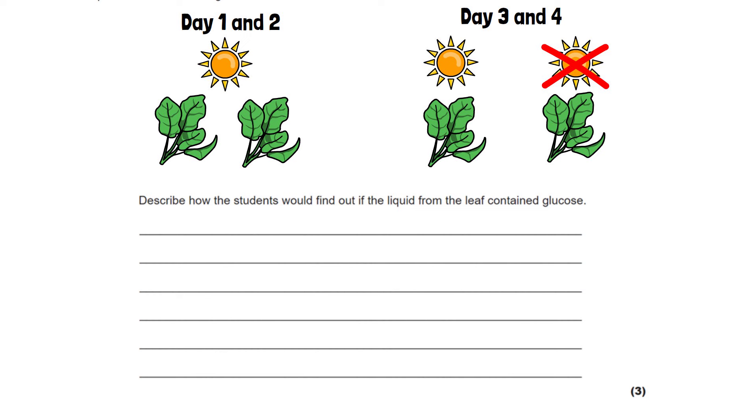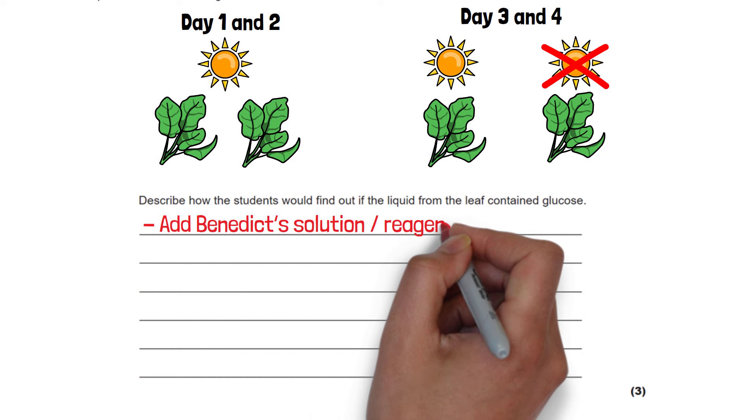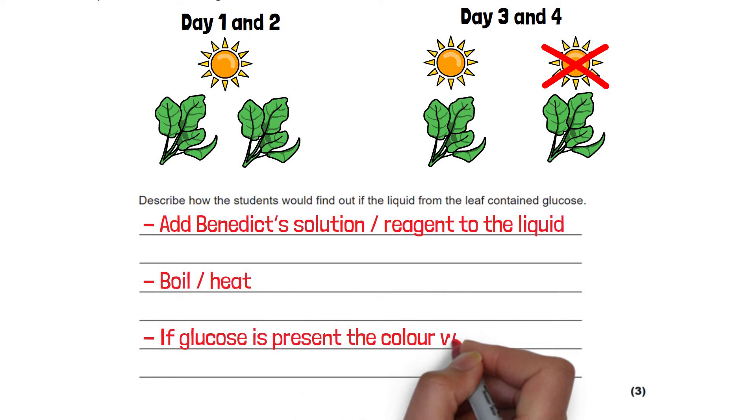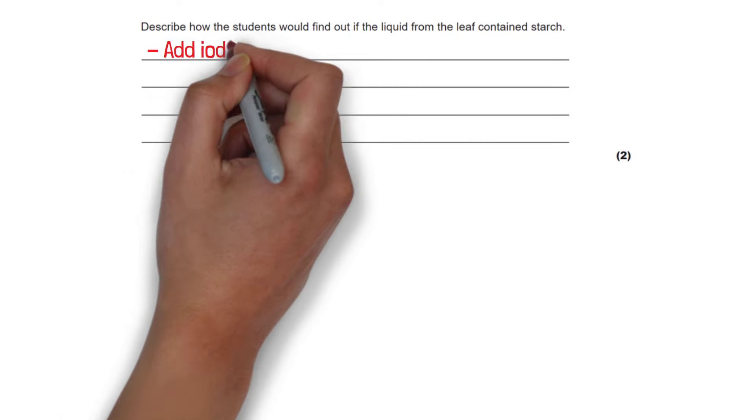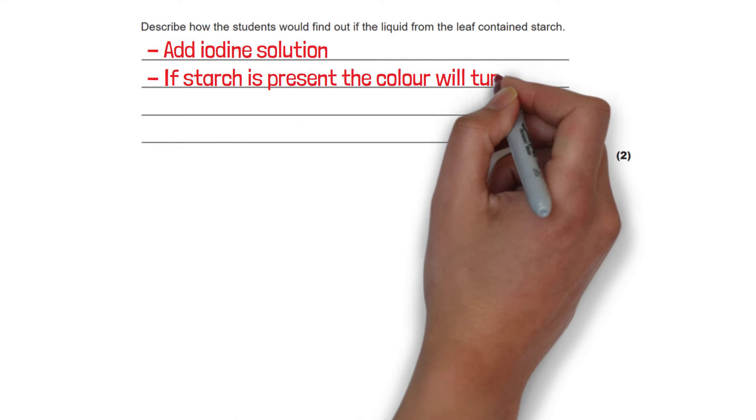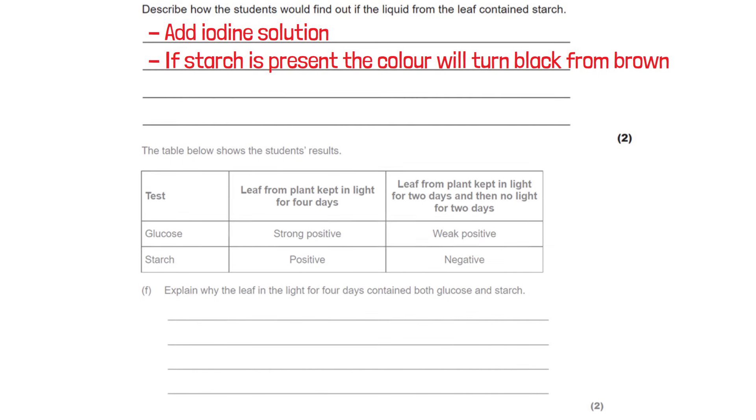Now the follow up questions to that piece of information is based on the starch and glucose tests. The first one says describe how the students would find out if the liquid from the leaf contained glucose. So we just need to describe the glucose test. Firstly, you need to add the benedict solution to the liquid. You would then boil or heat it and if the glucose is present the colour will change from blue to red. The second question is asking us to test for starch and we do this by adding iodine solution. If starch is present in the solution then that means the colour will turn black from like a browny orange colour. So if you get this question in your exam you just need to give the instructions and then the positive test result.